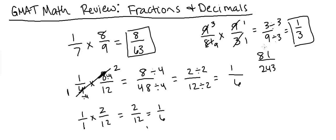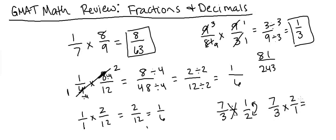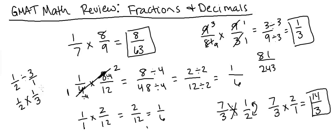Now let's talk about division. Division of fractions is straightforward: multiply by the reciprocal. For seven thirds divided by one half, change it to multiplication and flip the second fraction: seven thirds times two over one equals 14 over three. One more example: one half divided by three — write three as three over one, flip to get one third, then one half times one over three equals one sixth.